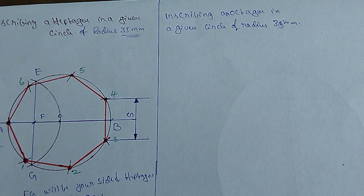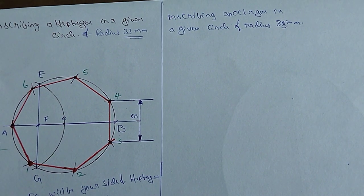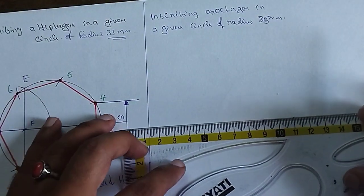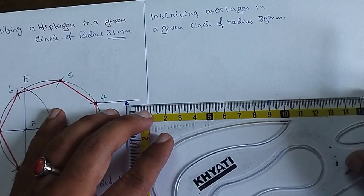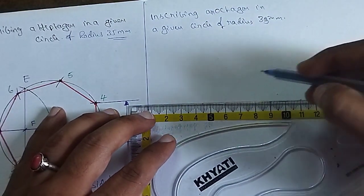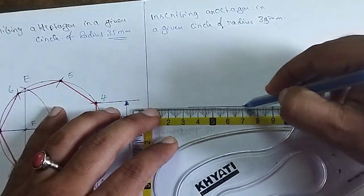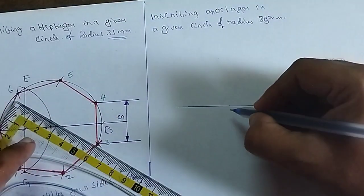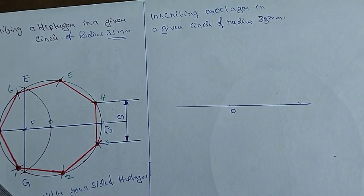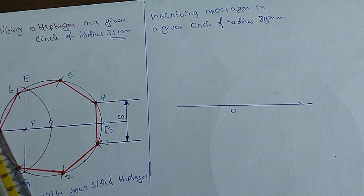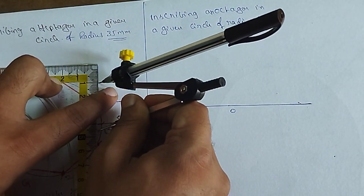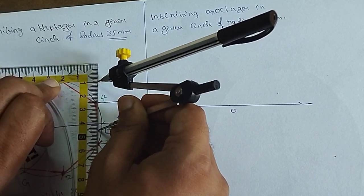First of all, we are going to draw a line — just draw a normal line. Make this one as O. So now we take 35 mm as the radius. We are going to scale 35 mm radius.